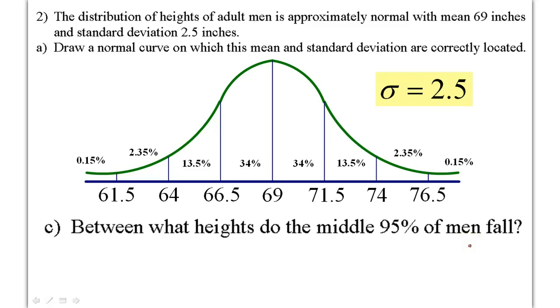Look at question C. Between what heights do the middle 95 percent of men fall? Now, that number should look familiar. Remember the three numbers that we memorized at the beginning? Is that one standard deviation or two? Two. That's two standard deviations. So, that means from here to here. They just say between what heights. So, we will just say 64 to 74. Start packing up as you continue to listen.